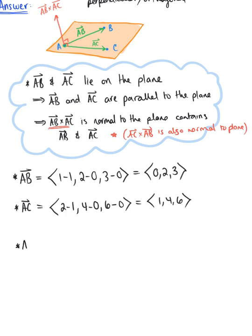I'm going to go ahead and find the vector defined by the cross product of vector AB and AC. Putting this into that 3 by 3 determinant, we have i hat, j hat, k hat. The second row is the components of vector AB, so 0, 2, 3. And the third row are the components of vector AC, 1, 4, 6.